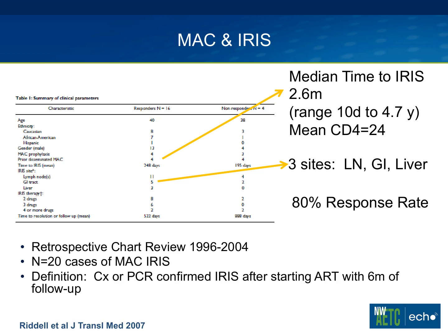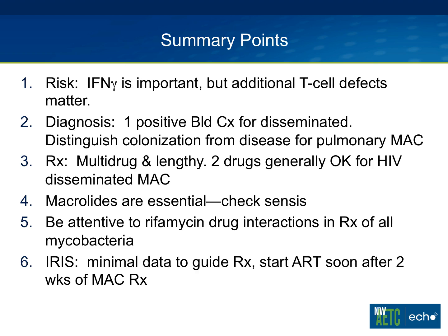Final comments are on IRIS. There's not a large body of IRIS literature comparable to the TB IRIS literature, but IRIS clearly occurs with MAC. Mycobacteria in general are infamous for the amount of IRIS-associated disease — M. leprae being perhaps the best example with a long history of IRIS-like syndromes that occurred long before HIV. For MAC, the general guidelines are to start MAC treatment for at least two weeks before starting ART. Given that most MAC patients with HIV have a CD4 count less than 50, it's very sensible to mirror the TB guideline: start ART quickly, but wait at least two weeks after initiating MAC treatment.